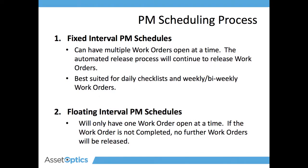You need to take into consideration that since you always know the due date for the next work order on a fixed interval PM schedule, the system will continue to generate more work orders whether you complete the previous ones or not. If it's a floating interval PM, you need to complete the last work order before it knows when the next one will be due, so you can only have one work order open at a time.